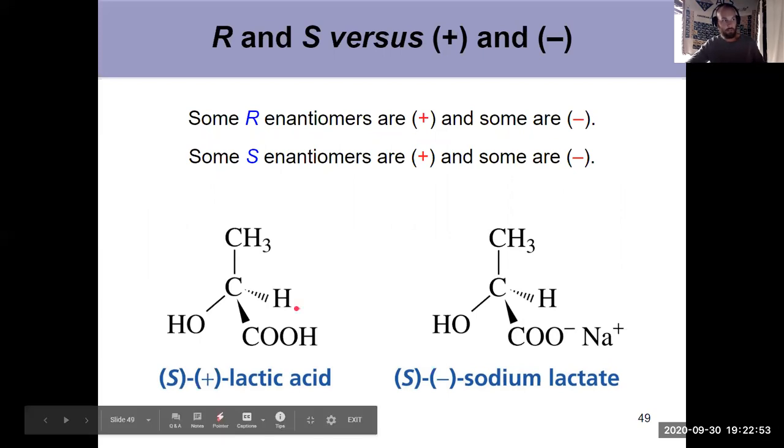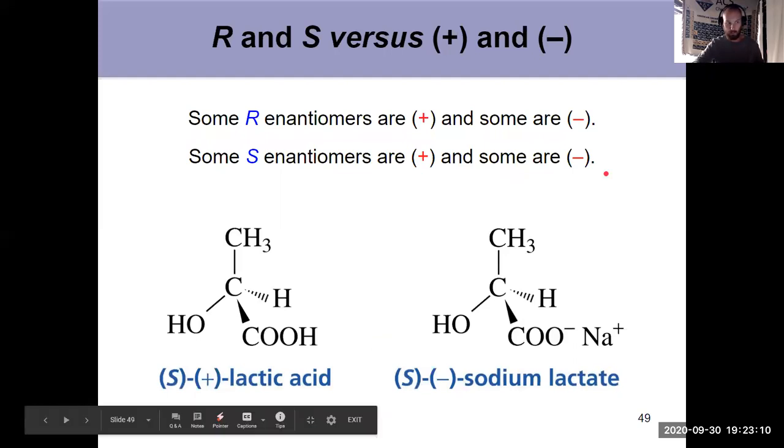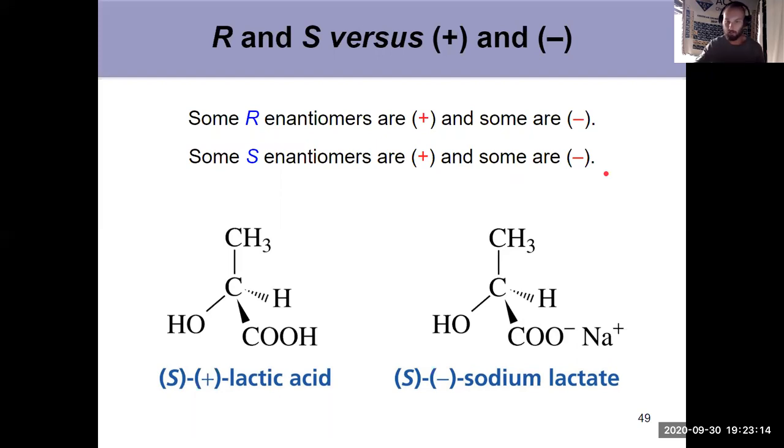Because as you see here on the top of slide 49, some R enantiomers are plus, which means they're dextrorotatory. They rotate clockwise. Other ones are levorotatory, which means they rotate counterclockwise. Other S are plus. Other R are minus. And there's no way to tell. It has to be determined experimentally.